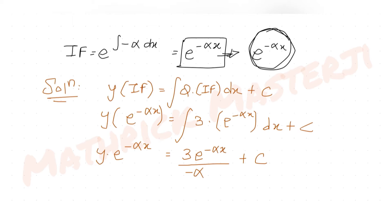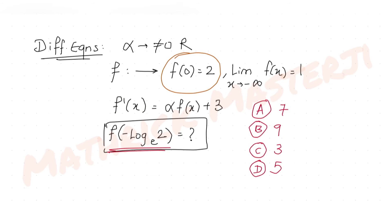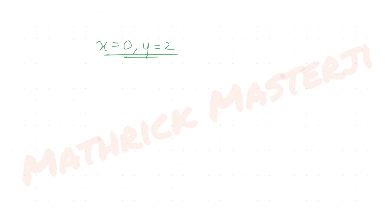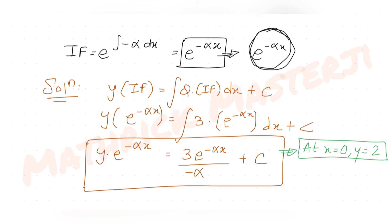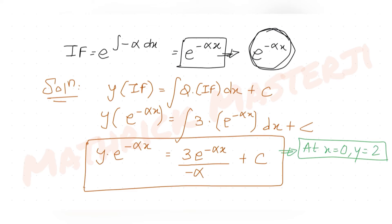Now applying the condition f(0) = 2, i.e., at x = 0, y = 2. Substituting: 2 · e^0 = (−3/α) · e^0 + C, which simplifies to 2 = −3/α + C. This is our first equation.